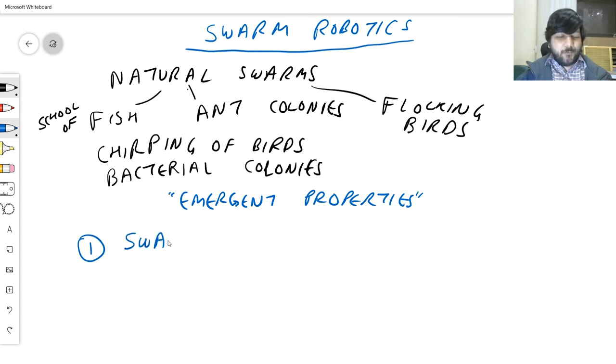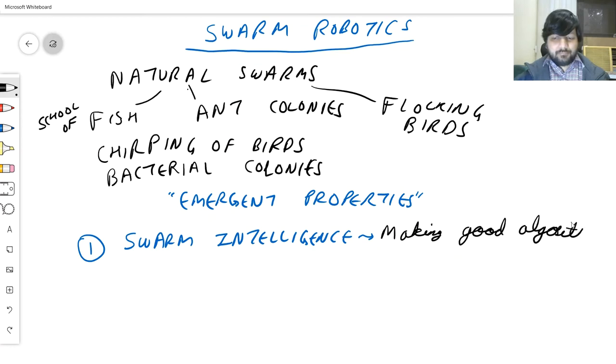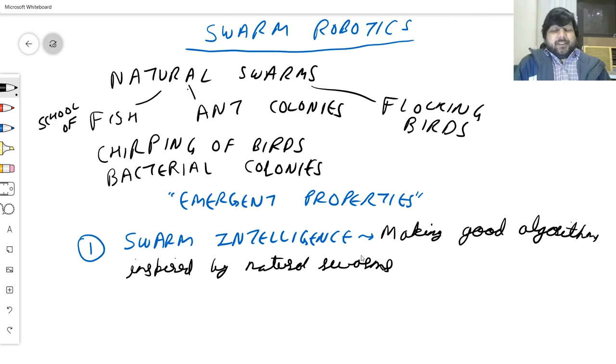Now this has led to two fields. The first field is swarm intelligence. We will be talking a bit about them in the course, but not today. So swarm intelligence is making good algorithms inspired by natural swarms. Most of them, not all, are optimization algorithms, and they do a great job. They've really changed domains after domains. These are interesting algorithms we use for all kinds of optimizations, for solving some real hard problems of computing and artificial intelligence, which otherwise by using classical techniques would not have been even possible.